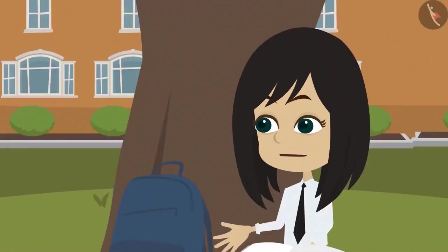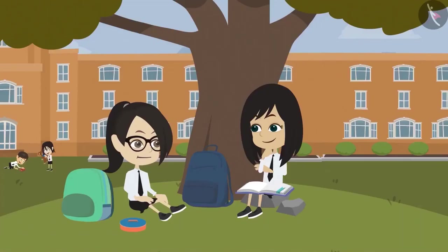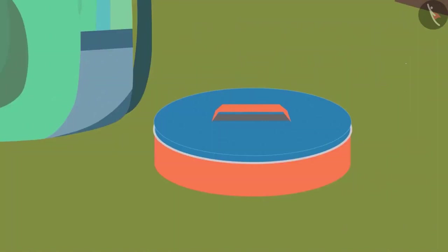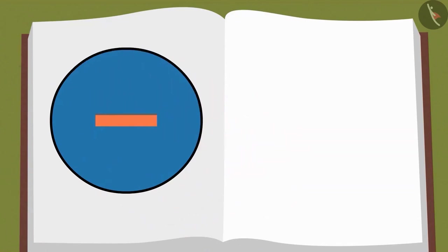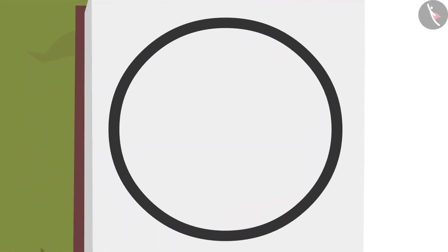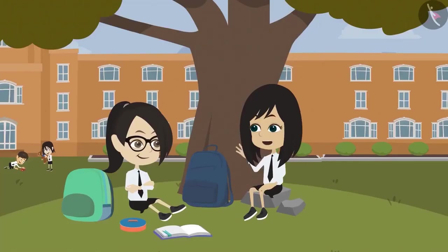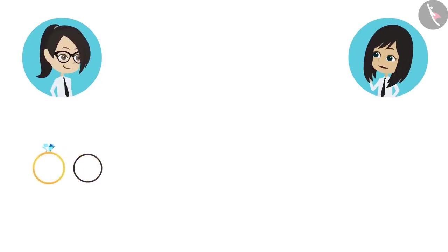Show me. Why have you taken out this tiffin box? I will tell you. But first, what is the shape of this tiffin box? This tiffin box is round. Now I will keep this on a paper and trace its boundary with a pencil. Now let us lift the tiffin box — a round figure is created. What other objects can we use to make a round figure? A ring is also round, but the ring will make a very small round figure.